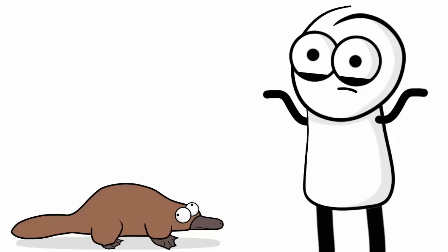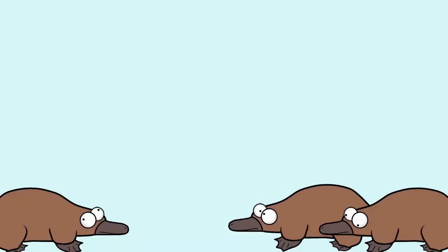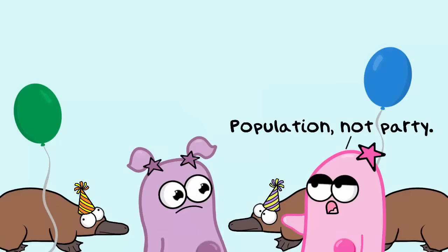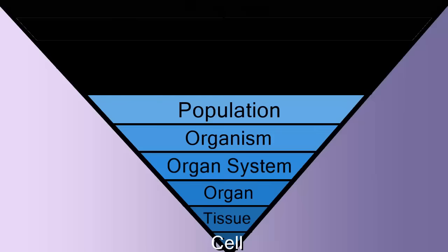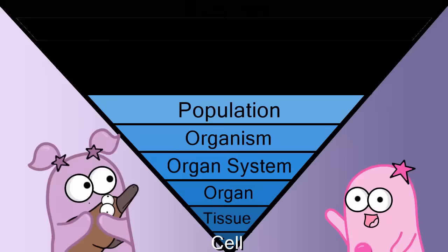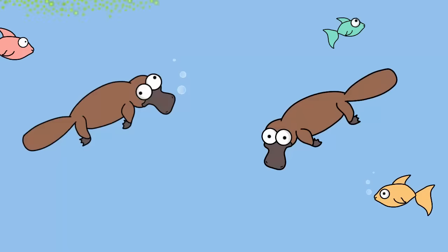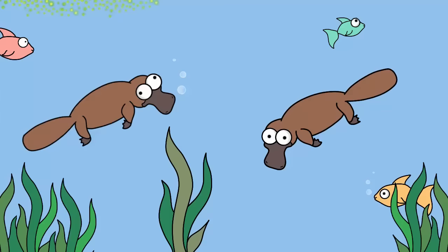Now, if you have a lot of platypuses together — what's the plural of platypus? According to dictionary.com, you can say platypi, which sounds especially fancy — and you have a population. This population of platypi can breed with each other, and they're all the same species. It's a platypi population! But include other populations, such as fish, algae, and plants, along with the platypi, and now you have a community.